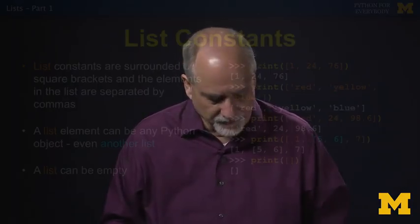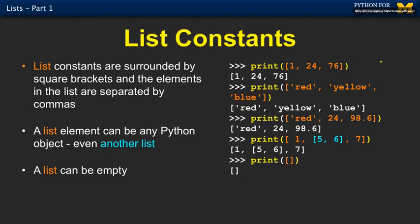List constants are anything in square brackets. That's a list of three integers, 1, 24, and 76. This is a list of three strings, red, yellow, and blue. We use commas and square brackets to start them and stop them. You do not have to have the same type of data in a list. Here is a list that has a string with red, an integer of 24, and then 98.6, which is a floating point number.